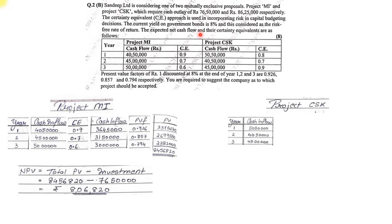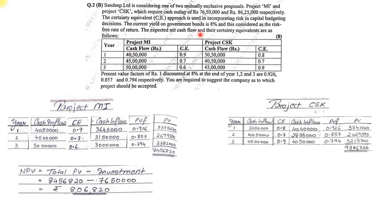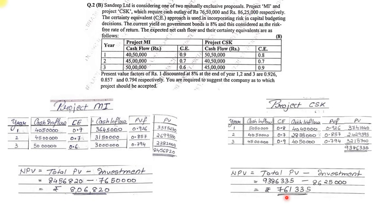For Project CSK: the same process - multiply cash inflows by certainty equivalents, then by PV factors. The total PV comes to 93 lakh 86,335. NPV = 93,86,335 − 86,25,000 = rupees 7,61,335. Both NPVs are positive so both are profitable, but Project MI has the higher NPV of 8,06,820 compared to CSK's 7,61,335. Therefore, based on the highest NPV, Project MI should be accepted.